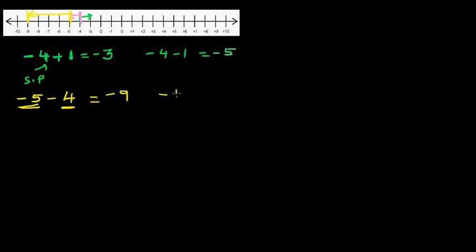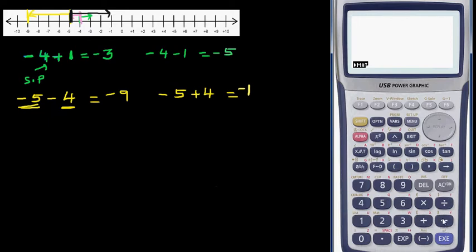What would happen if it is negative five plus four? You're going four to the right now. From negative five, you go one, two, three, four — you're reaching negative one. For those who are struggling, always try to do it without a calculator and then check it on a calculator — that's how you learn. Negative five take away four is negative nine, and negative five plus four is negative one.